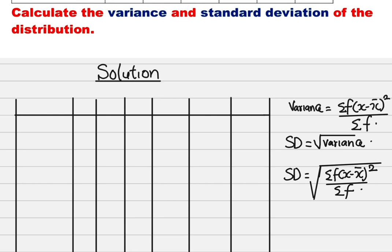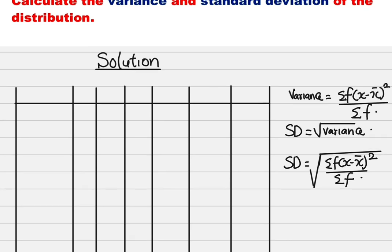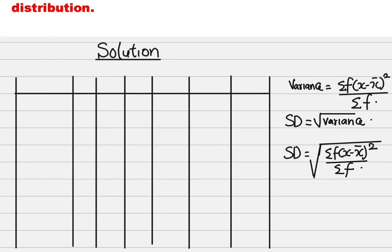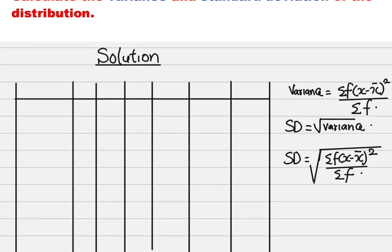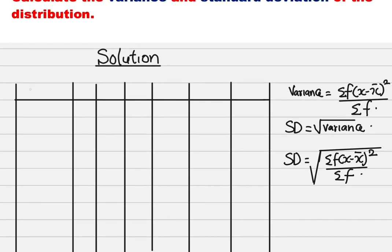Check it out at the right-hand corner — variance is summation of f times (x minus x̄), all squared, all over summation f. Standard deviation (SD) is the square root of variance, hence SD is the square root of summation of f times (x minus x̄) all squared, all over summation f. Let's move quickly to solve this question.